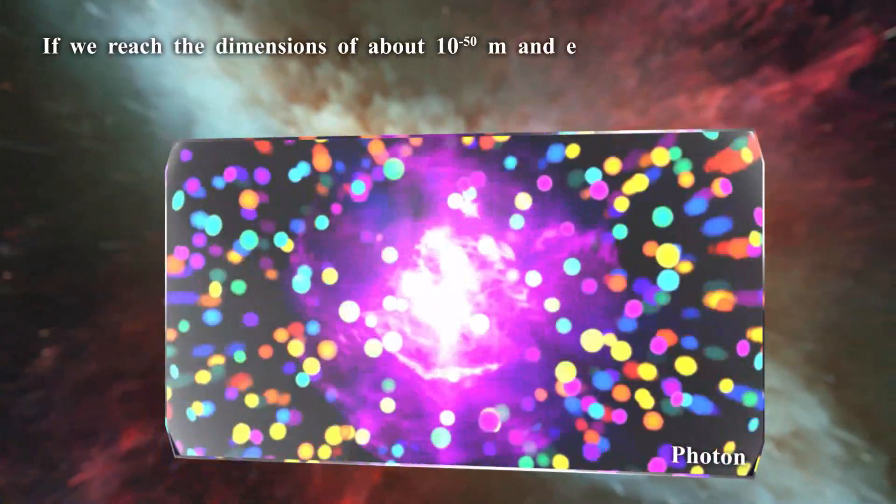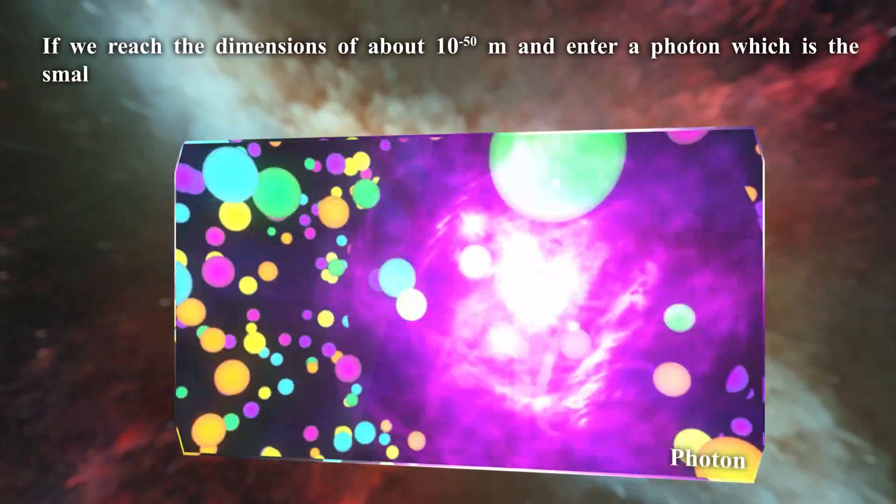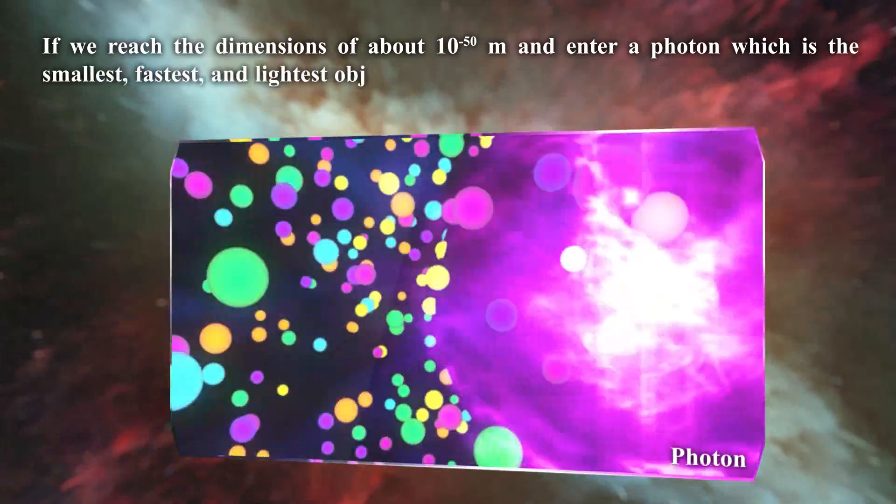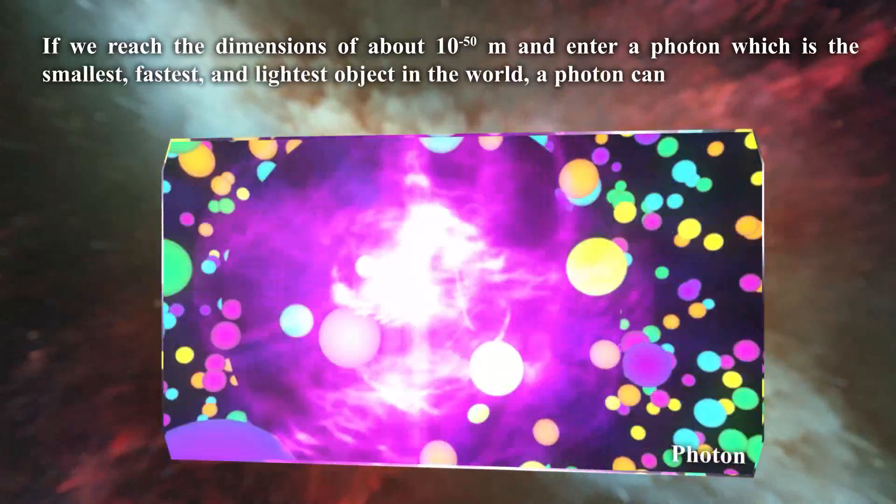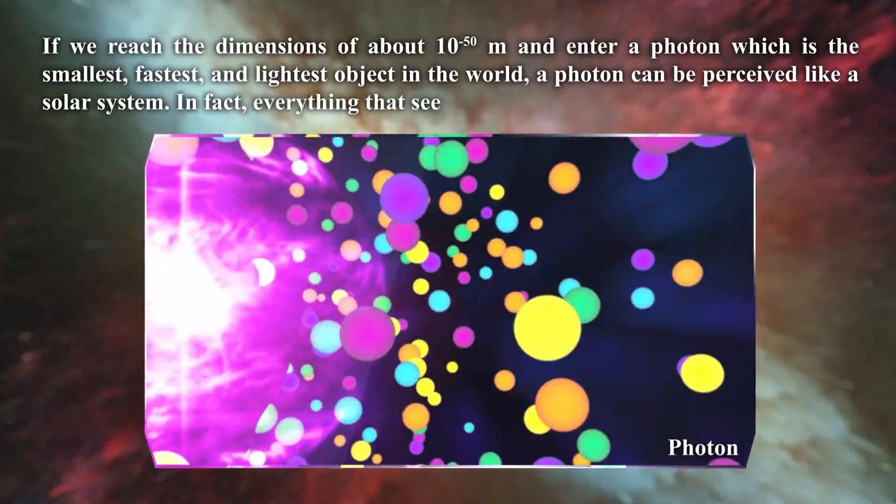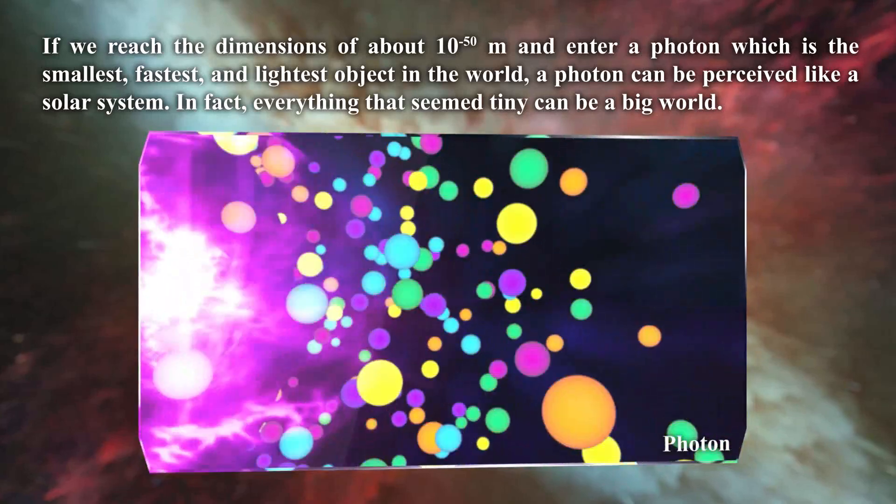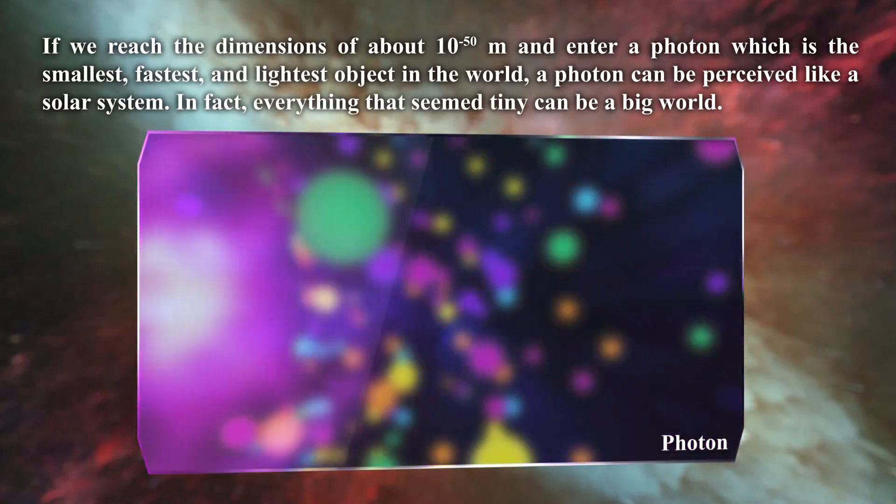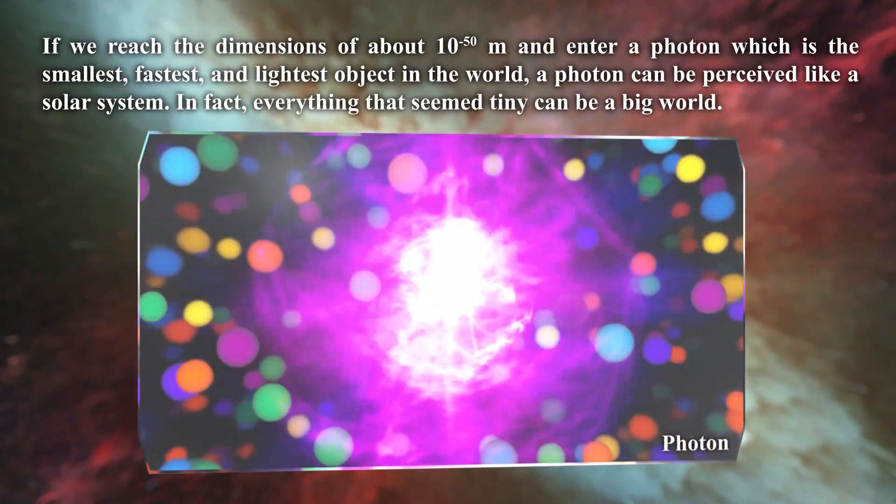If we reach the dimensions of about 10 to the power of minus 50 meter and enter a photon, which is the smallest, fastest and lightest object in the world, a photon can be perceived like a solar system. In fact, everything that seemed tiny can be a big world.